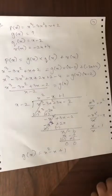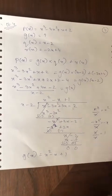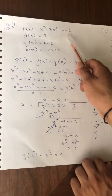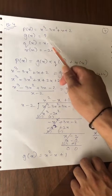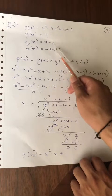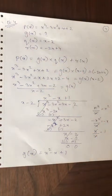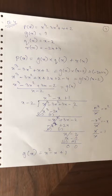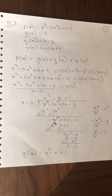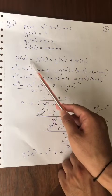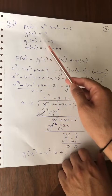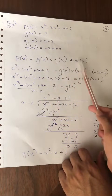Now see question number 4. p(x) is given, and on dividing this polynomial by g(x), the quotient and remainder are also given. We need to find g(x). We use the division algorithm: P(x) = G(x) × Q(x) + R(x), same as A = BQ + R from Euclid's algorithm, where A is dividend, B is divisor, Q is quotient, and R is remainder.